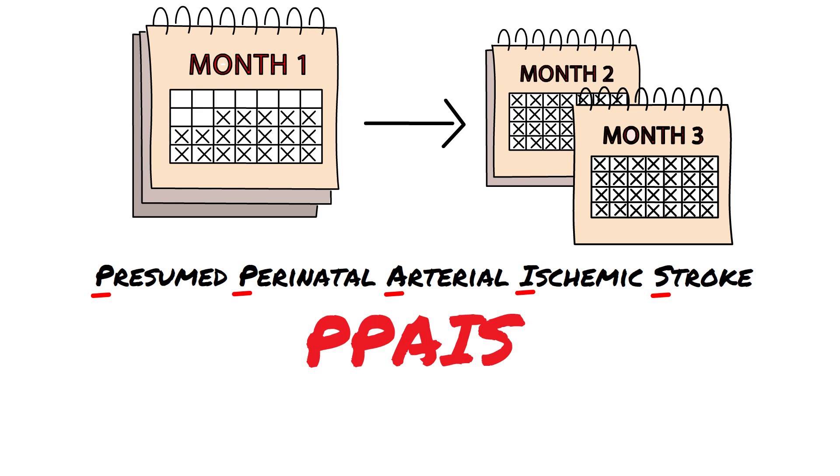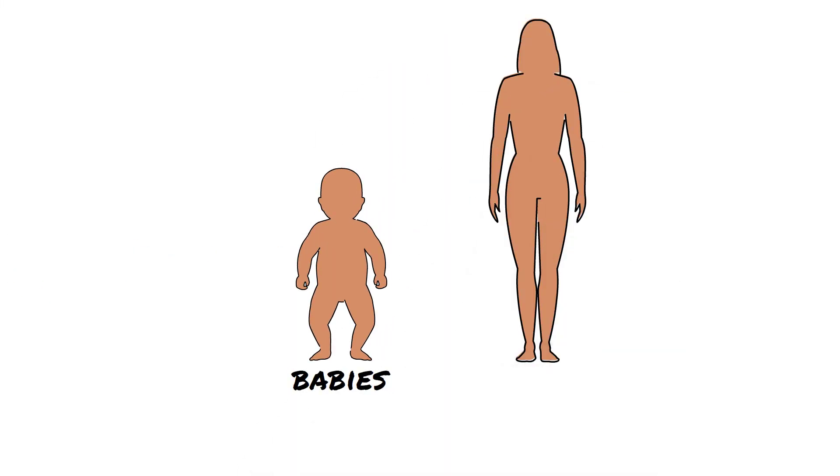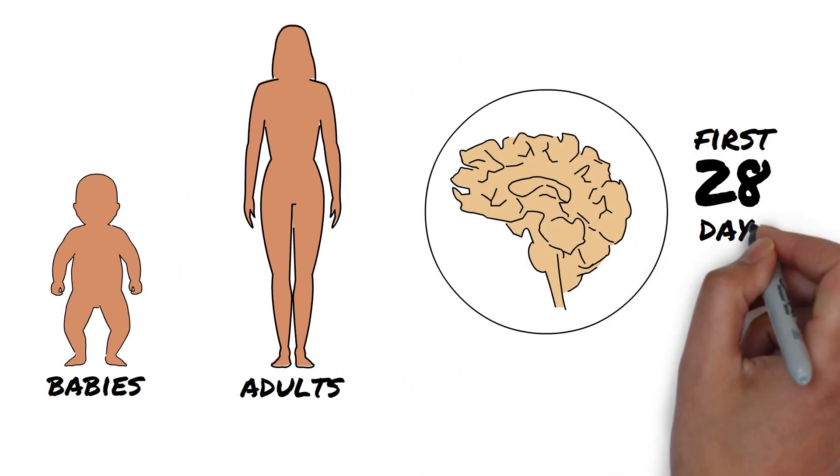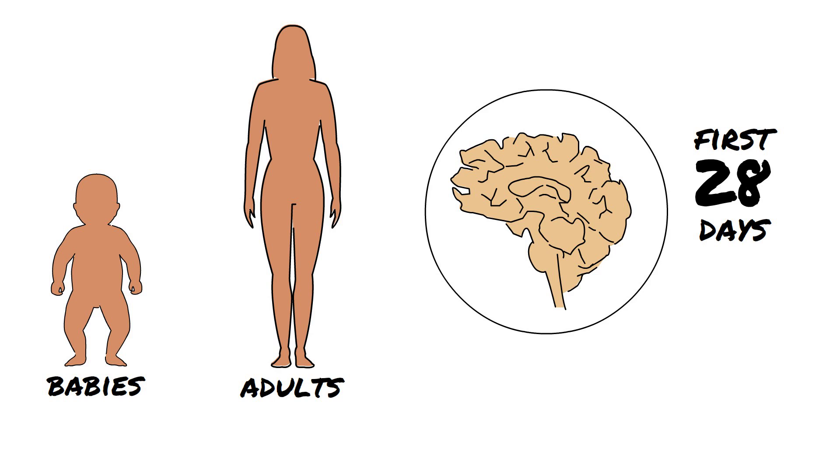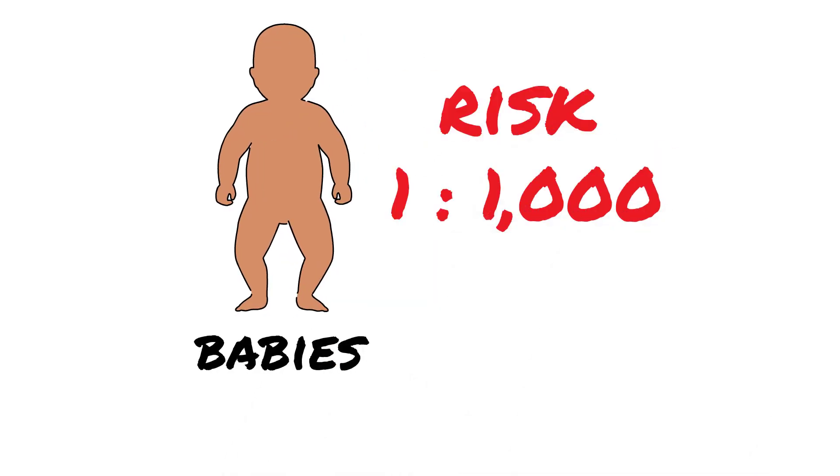Most people may not know that strokes can happen in babies and children. The reasons why babies and children have strokes differ from why adults have strokes. Recent data for strokes in babies suggests that the risk is one to one thousand live births.